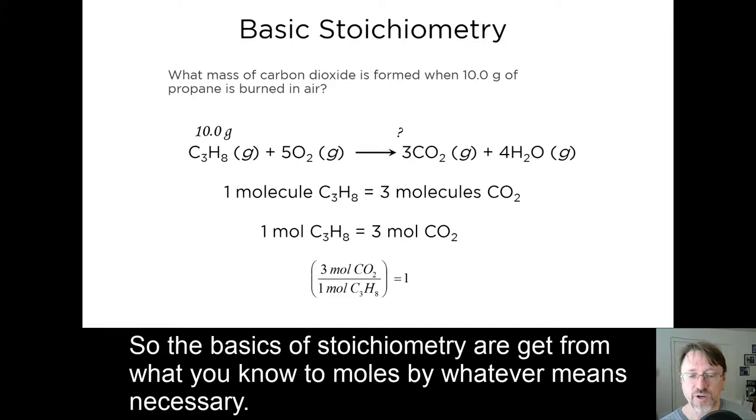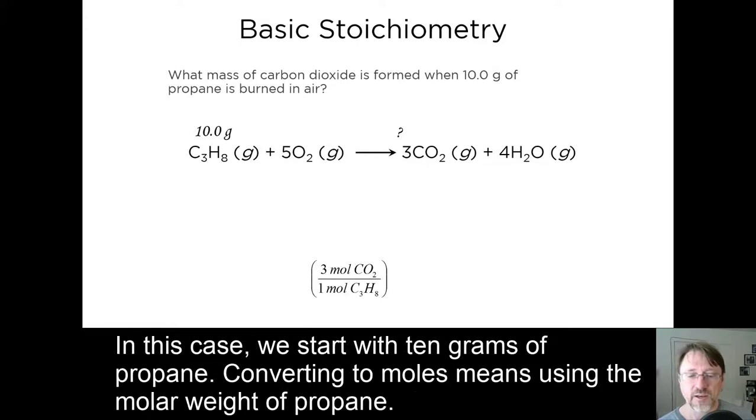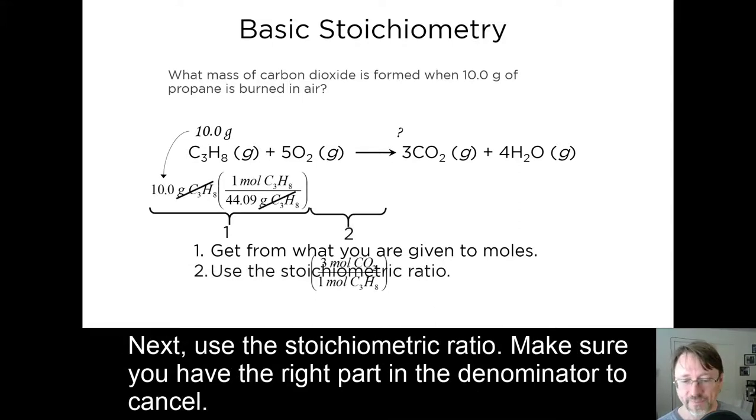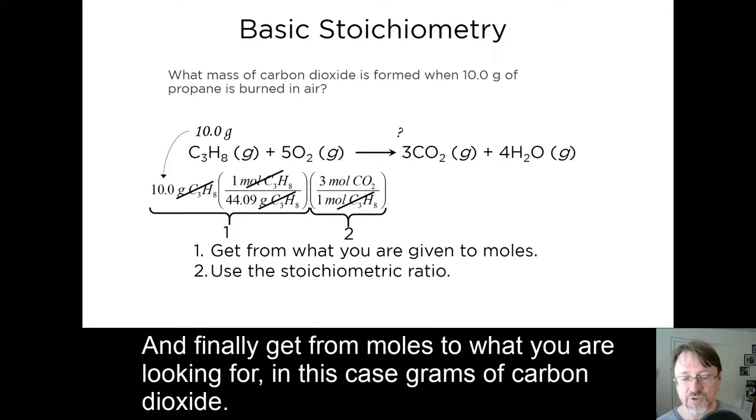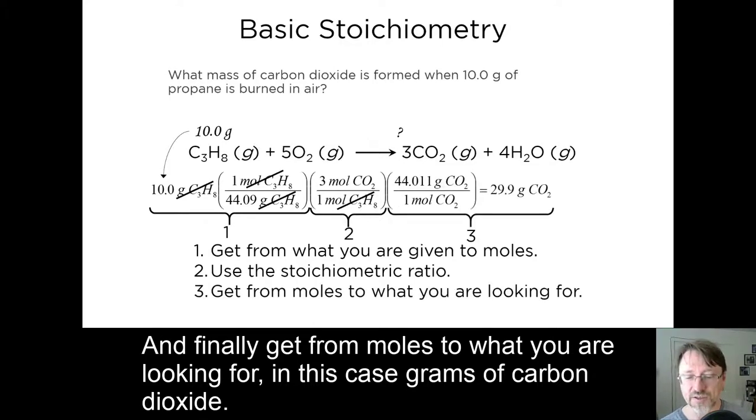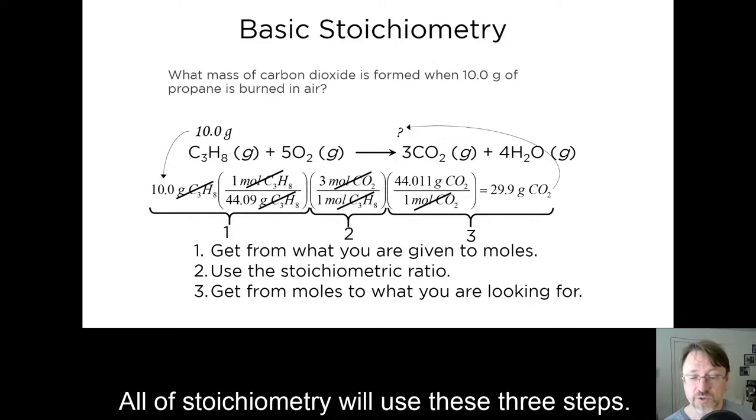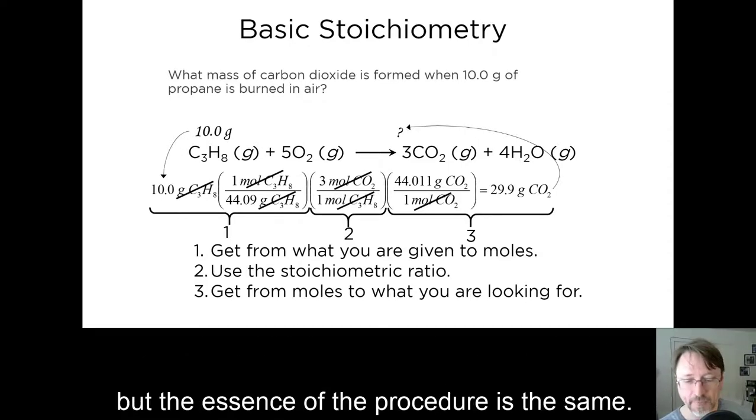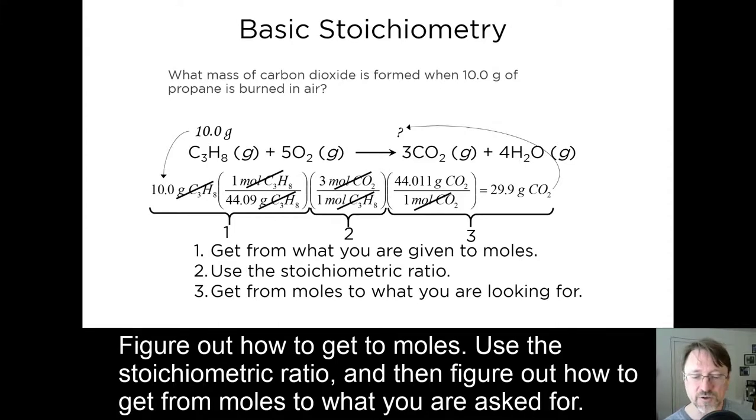So the basics of stoichiometry are get from what you know to moles by whatever means necessary. In this case, we start with 10 grams of propane. Converting to moles means using the molar weight of propane. Next, use the stoichiometric ratio. Make sure you have the right part in the denominator to cancel. And finally, get from moles to what you're looking for. In this case, grams of carbon dioxide. All of stoichiometry will use these three steps. The first and third step may involve multiple conversions, because you won't be going to or from mass. But the essence of the procedure is the same. Figure out how to get to moles. Use the stoichiometric ratio, and then figure out how to get from moles to whatever you're asked for.